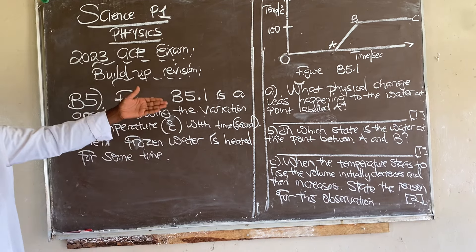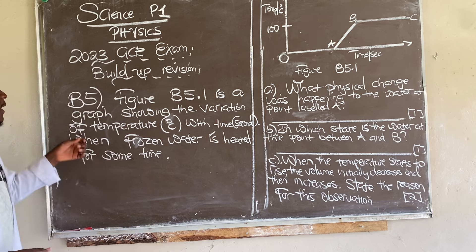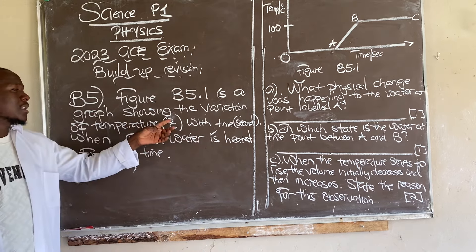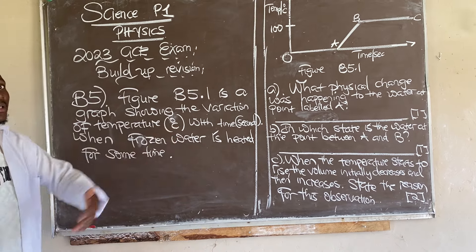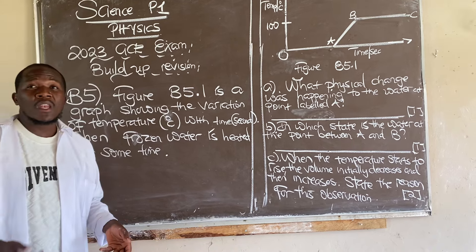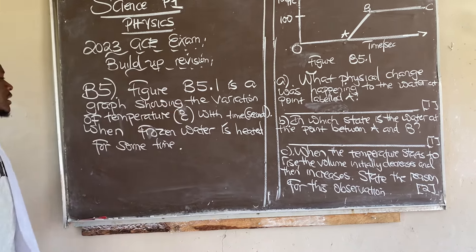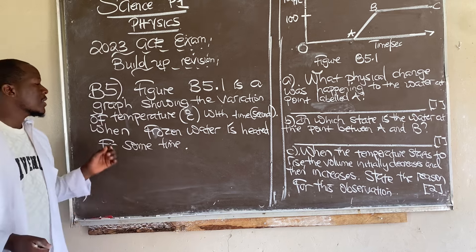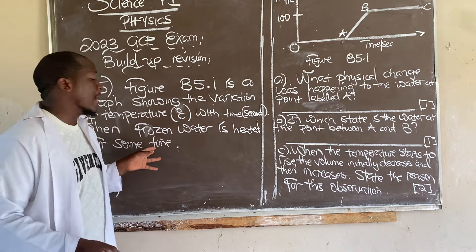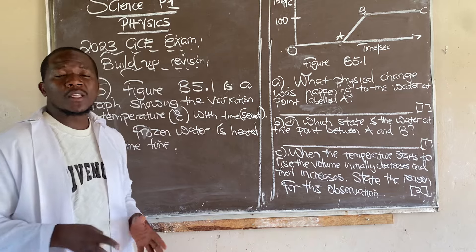It says: Figure 5.1 is the graph showing the variation of temperature — given in degrees Celsius, because temperature at times can also be given in Kelvin — with time, which is given in seconds, when frozen water is heated for some time.